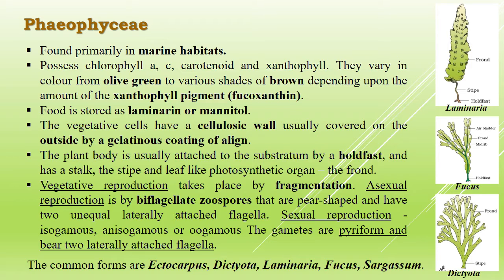Vegetative reproduction takes place by fragmentation. Asexual reproduction occurs with the help of biflagellate zoospores that are pear-shaped and have two unequal laterally attached flagella. One flagellum is of the whiplash type — where the basal part is broader and the apical part is narrower — and the other is of the tinsel type, which has bristles.